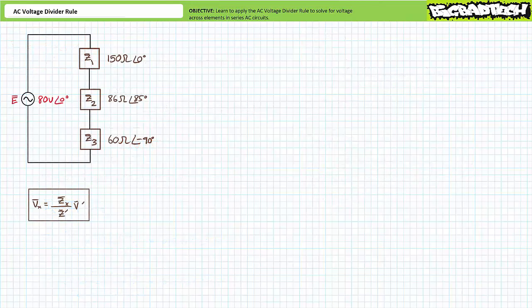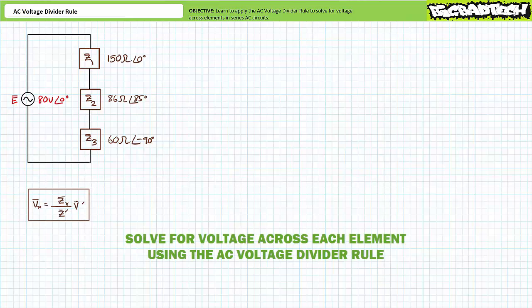Let's try another illustrated example of the AC voltage divider rule, this time featuring a series combination of three elements. The impedances have already been calculated: Z1 is 150 ohms at 0 degrees (purely resistive), Z2 is 86 ohms at 85 degrees (inductive with slight internal resistance), and Z3 is 60 ohms at negative 90 degrees (purely capacitive). The source is 80 volts at 0 degrees. We are only asked to solve for the voltage drop across each element using the AC voltage divider rule — not for current or total impedance.